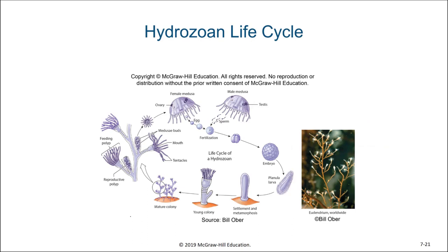Here we can see a model of this lifestyle with the medusa forming the gametes, the gametes then forming an embryo, then a planula larva. That planula larva settles on the bottom and undergoes metamorphosis into a colony, and that colony reproduces through asexual means until eventually they form reproductive medusa again. This is the life cycle of one type of cnidarian known as a hydrozoan.